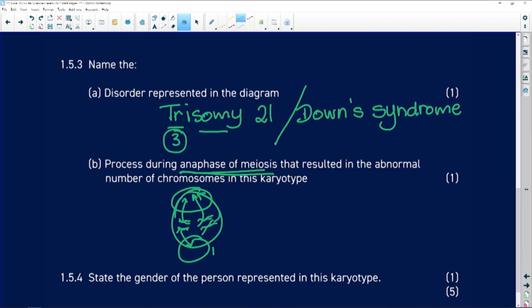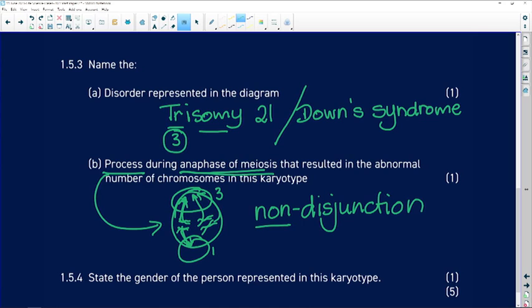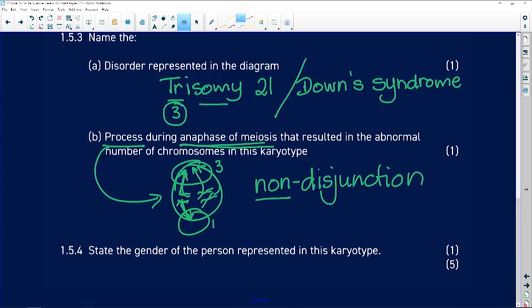We'd have one down here and three up there. What is this process? You learned about it - non-disjunction. Disjunction means the chromosomes are splitting properly. Non-disjunction means they're splitting incorrectly.